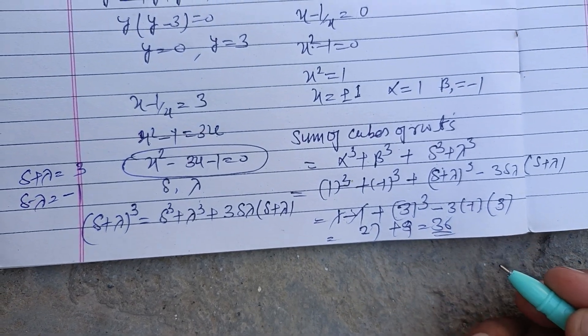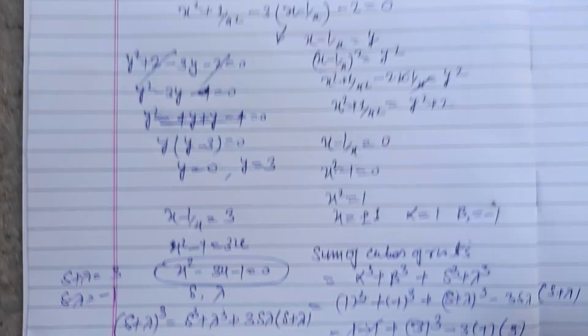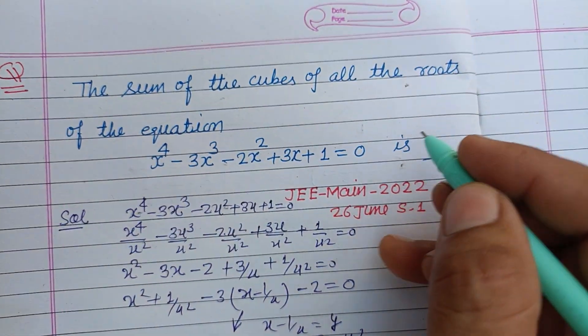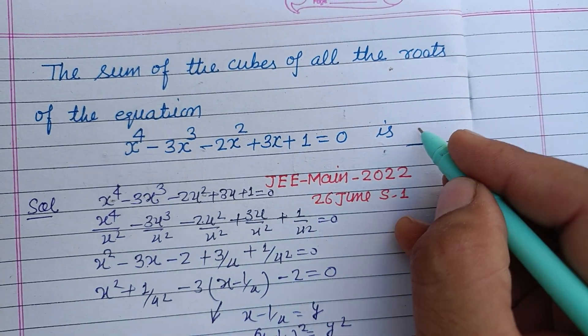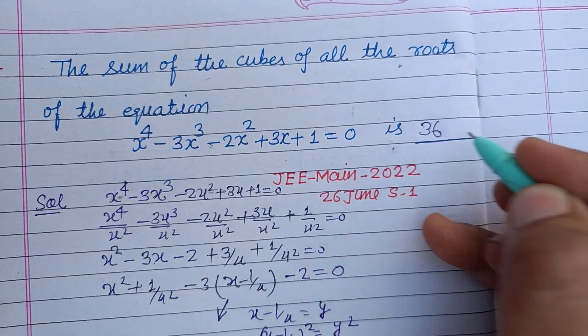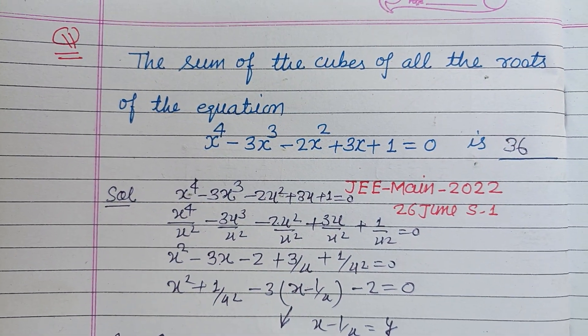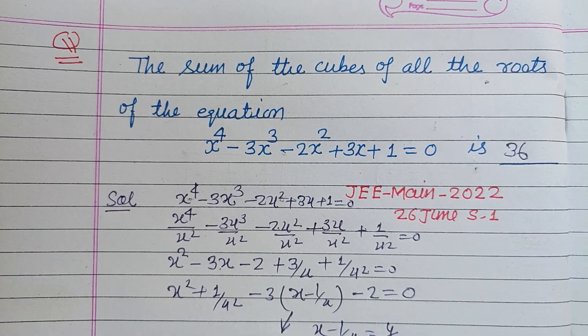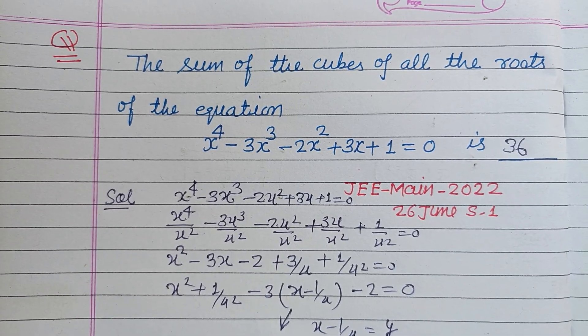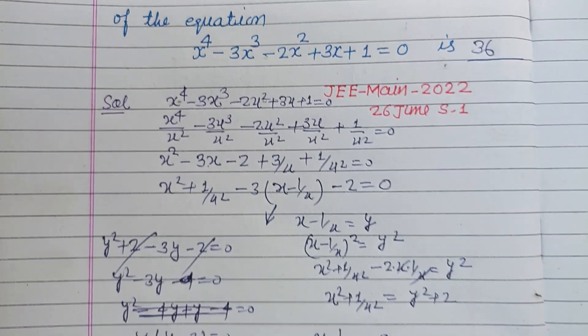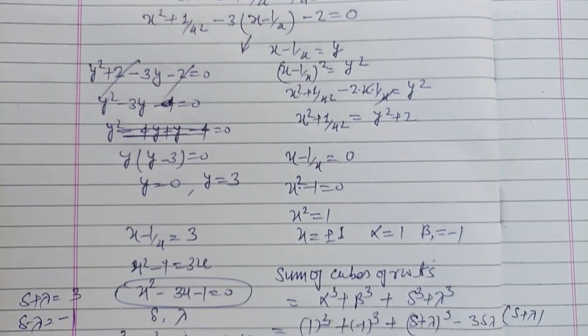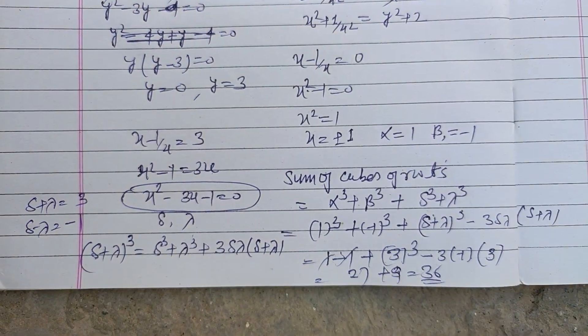So 36 is the sum of the cubes of the roots of this equation. I hope you got it — please like the video, subscribe to the channel, thanks for watching.